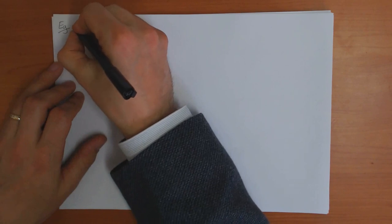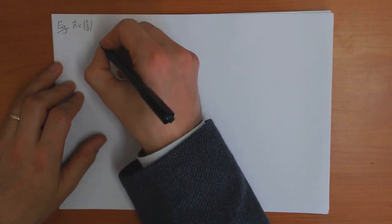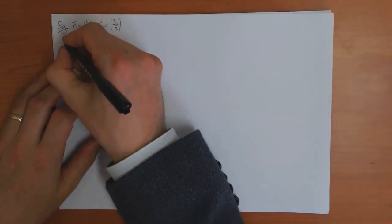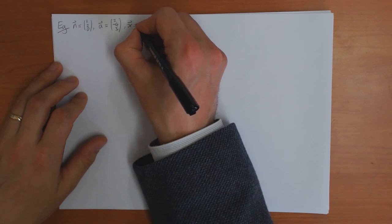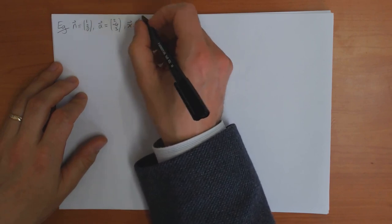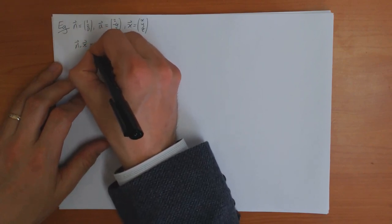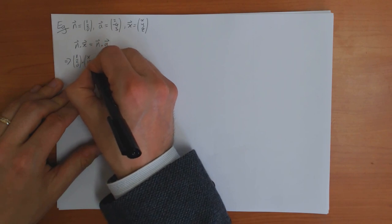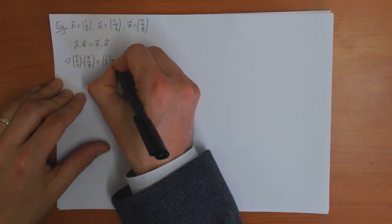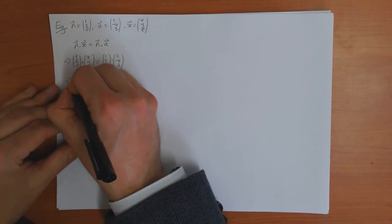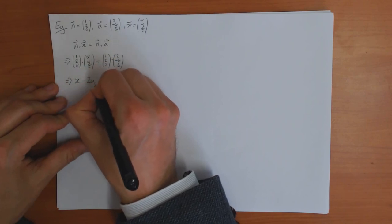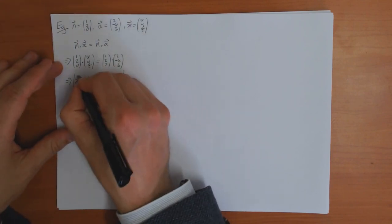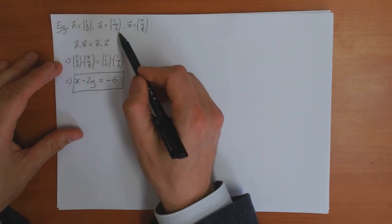For example, suppose n equals (1, 2, 0) and a equals (2, -4, 3), and x is the general point (x, y, z). Then n dot x equals n dot a gives us (1, 2, 0) dot (x, y, z) equals (1, 2, 0) dot (2, -4, 3). Computing the scalar products: x plus 2y equals 2 minus 8, which is minus 6. So x plus 2y equals minus 6 defines the plane with this normal and point.